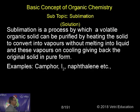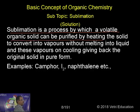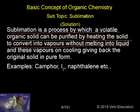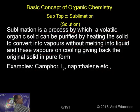Sublimation is a process by which a volatile organic solid can be purified by heating the solid to convert into vapors without melting into liquid, and these vapors on cooling give back the original solid in pure form. Examples include camphor, iodine, naphthalene, etc.